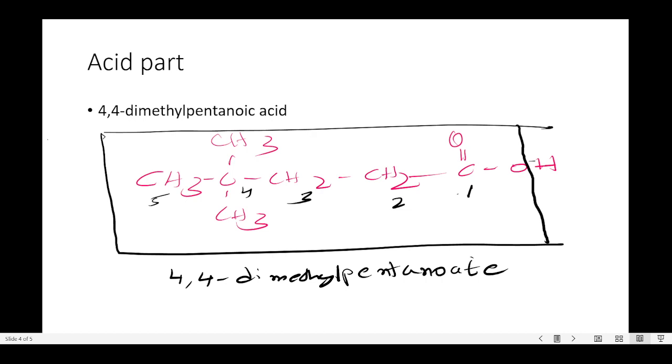The two methyl groups are on carbon four, so that's why it's 4,4-dimethylpentanoic acid. Now what we do is remove the 'oic acid' and put 'oate'. So this will become 4,4-dimethylpentanoate.